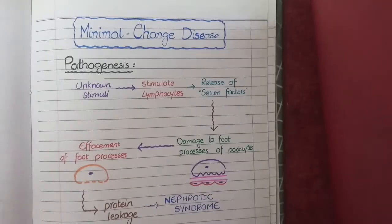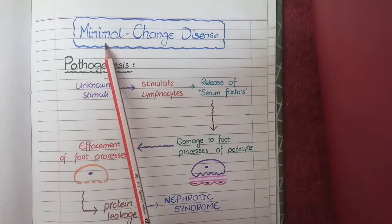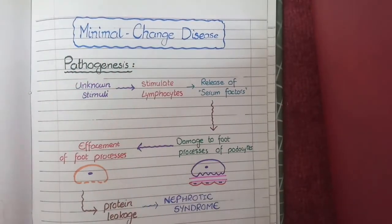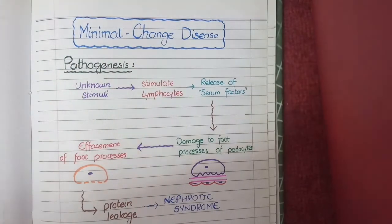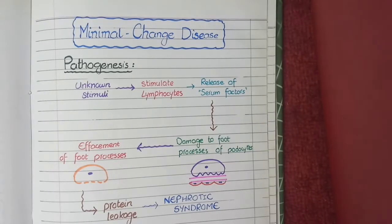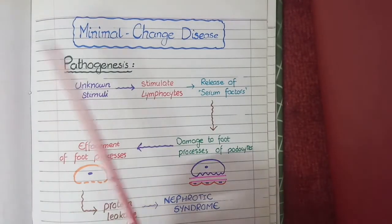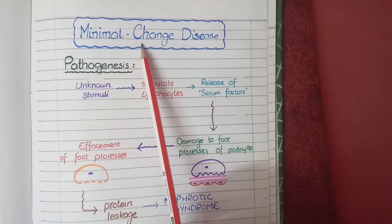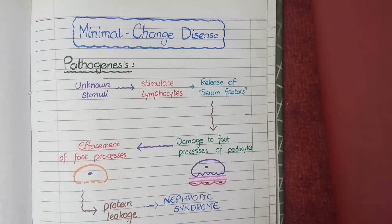The first point is that minimal change disease is called 'minimal change' because on light microscopic view there is no or minimal change in the morphological structure. Secondly, minimal change disease is the most common cause of nephrotic syndrome in children.